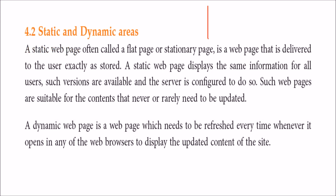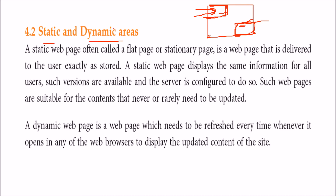A web page may contain some static areas and some dynamic areas. The static part will not change — for example, a company's vision and ideas are static. The dynamic part will change. For instance, if you are making a website for Cricketinfo.com and a cricket match is going on, you want to change the score every second or microsecond — that is how dynamicity comes into the picture.